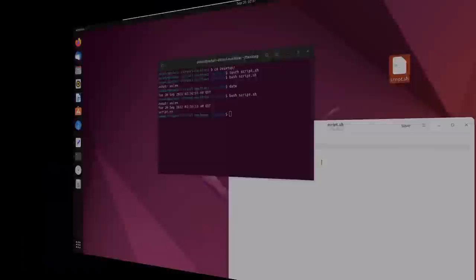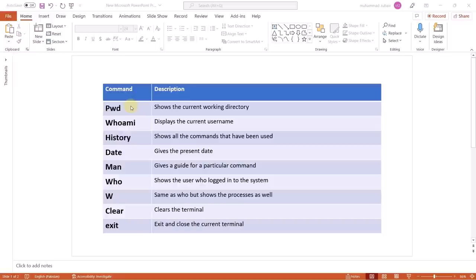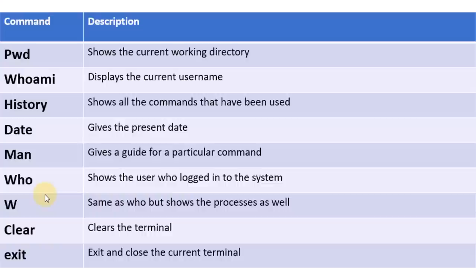Now let's talk about some Linux commands that a Linux administrator must know. First, PWD — Present Working Directory — shows the current working directory. Then 'whoami' displays the current username. 'History' shows all commands entered in the terminal. 'Date' gives the current date and time. 'Man' gives a guide about a particular command — for example, 'man pwd' gives the full documentation for pwd. 'Who' shows which user is logged into the system, and 'w' shows the same but with processes as well.